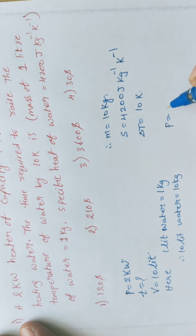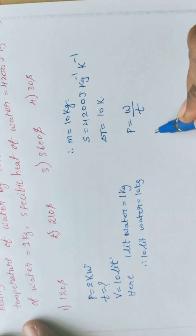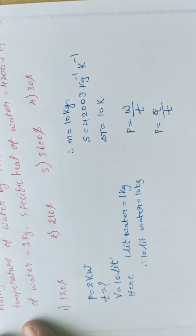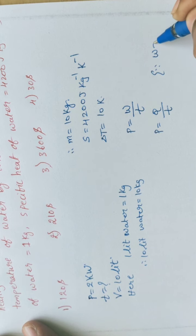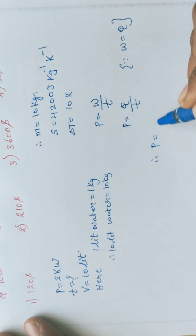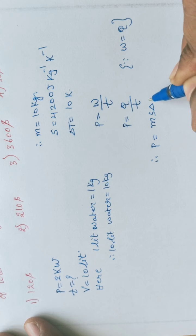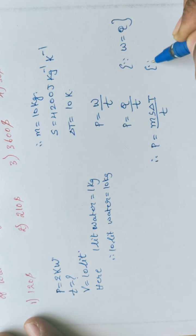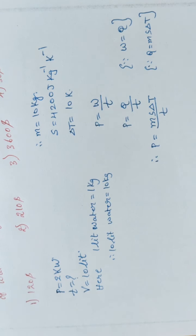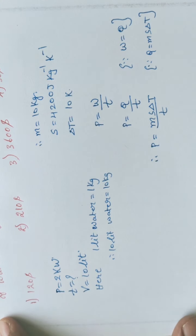Recall that P equals W by t. For heating problems, W is replaced by heat energy Q, so P equals Q by t. By heat concepts, Q equals m times s times delta T, so P equals ms delta T divided by t.